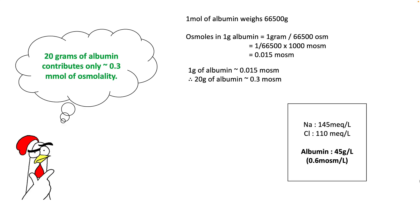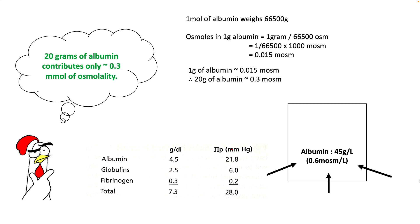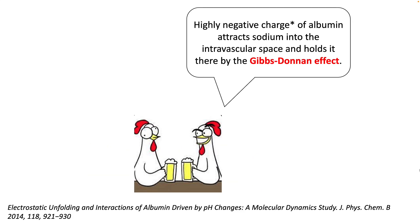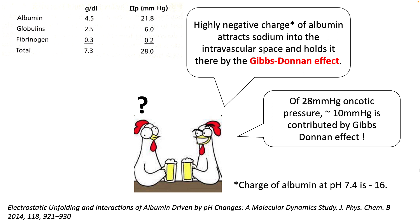Most of you know that albumin is a large molecule, so its contribution to osmolality is minimal. If you calculate it, 20 grams of albumin contributes only about 0.3 millimoles of osmolality — much lower than the sodium and chloride present in plasma. However, albumin doesn't leak out, so it is able to generate around 28 mmHg of oncotic pressure. A large part of this oncotic pressure is contributed by the Gibbs-Donnan effect, which occurs because of the highly negative charge on albumin. Each molecule of albumin at pH 10.4 has around minus 16 negative charges, and 10 mmHg out of that 28 mmHg oncotic pressure is contributed by the Gibbs-Donnan effect.